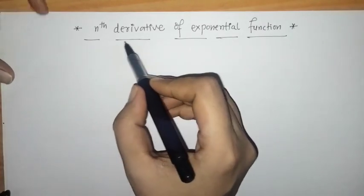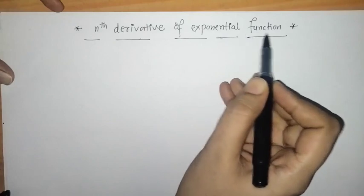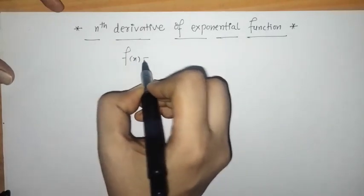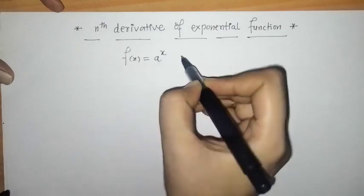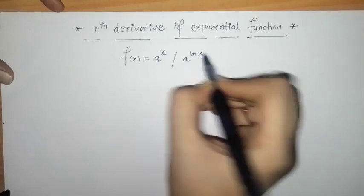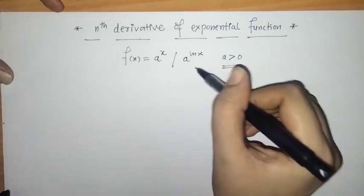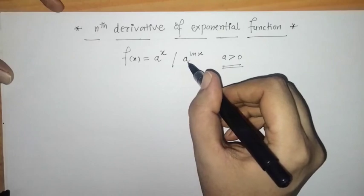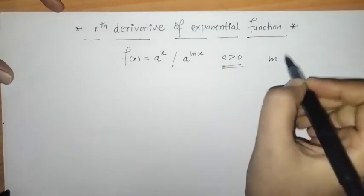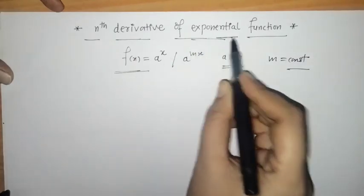Hello everyone, welcome to Unlock Maths. Today we have to find the nth derivative of an exponential function. We know that a function of the form a raised to ax, or a raised to mx, where a is greater than 0, is an exponential function. This a is called the base of the function, and m is any constant.